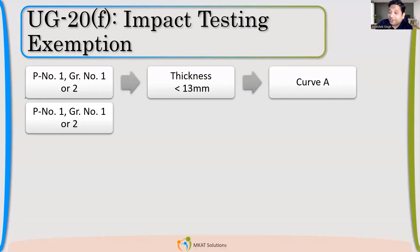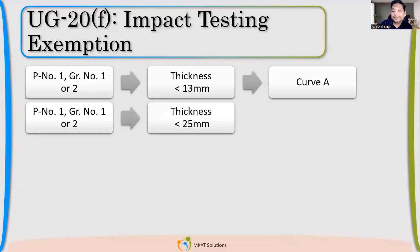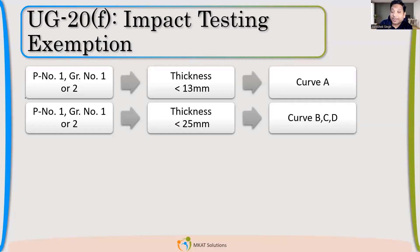Remember, there are additional requirements which need to be met — not only this alone. Second, if my thickness is less than 25 mm and my material is in curve B, C, or D, then the exemption is extended. These are supposed to be better materials, and the code allows up to 25 mm without impact testing.